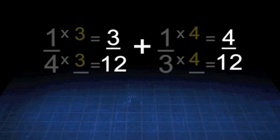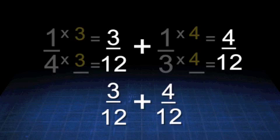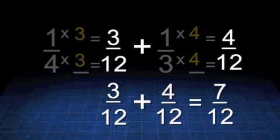The math problem now turns into 3 twelfths plus 4 twelfths. Because the denominators are the same, we can add the numerators and get the sum of 7 twelfths.